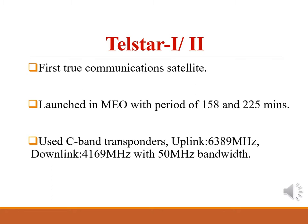After some early attempts to use large balloons, ECO-1 and ECO-2, as passive reflectors for communication signals and some small experimental satellite launches, the first true communication satellites were Telstar 1 and 2. They were launched in July 1962 and May 1963. The Telstar satellites were built by Bell Telephone Laboratories and used C-band transponders adapted from terrestrial microwave link equipment.